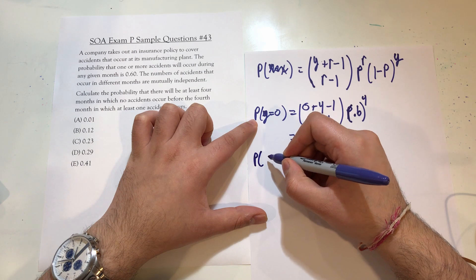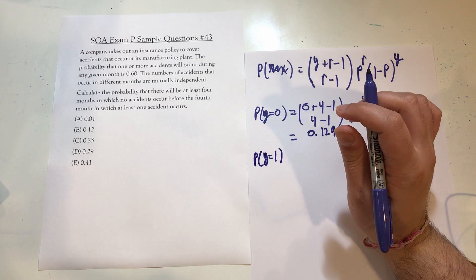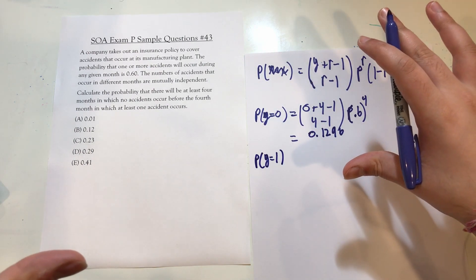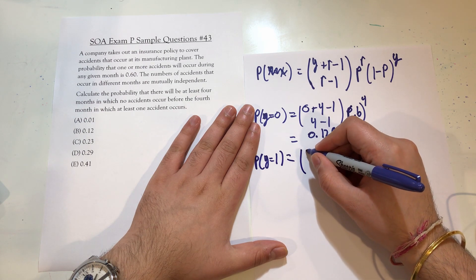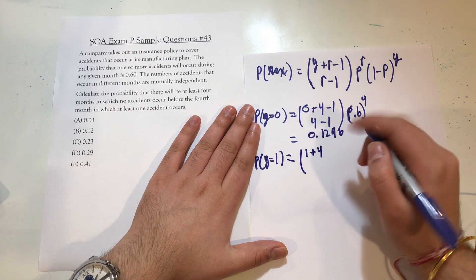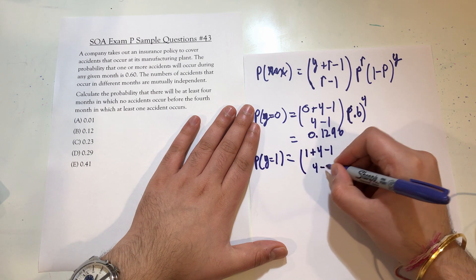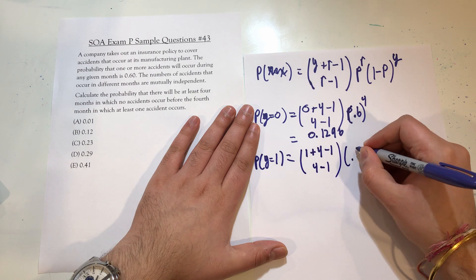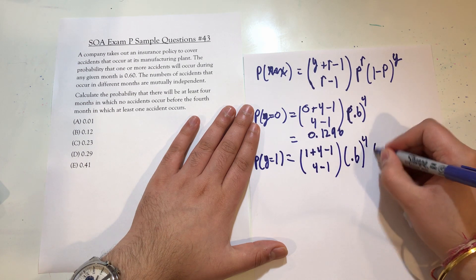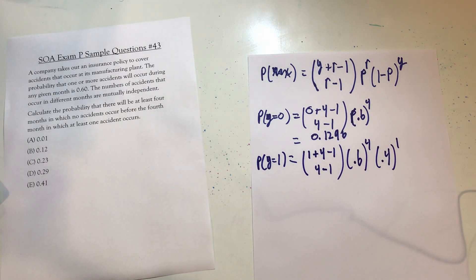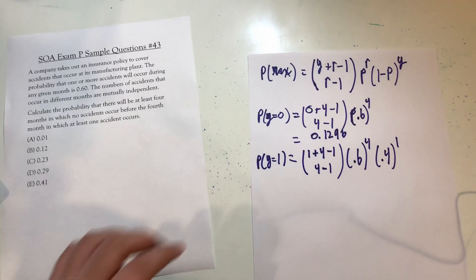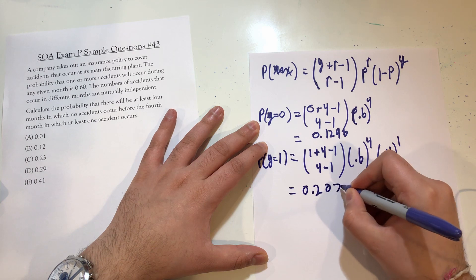Now we calculate the probability of there being exactly one month with no accidents before the fourth month in which an accident occurs. That's going to be (1 + 4 - 1) choose (4 - 1), which is 4 choose 3, times 0.6 raised to the fourth, times 0.4 raised to the first. Calculating this gives 0.20736.